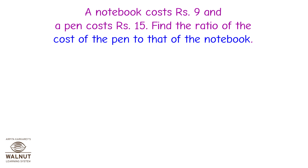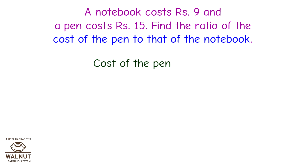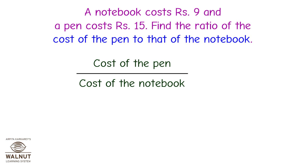A notebook costs rupees 9 and a pen costs rupees 15. Find the ratio of the cost of the pen to that of the notebook. First, we will write the ratio to be found out as a fraction. The fraction is cost of the pen upon cost of the notebook, that is equal to 15 upon 9.